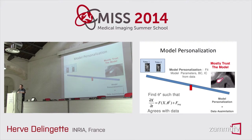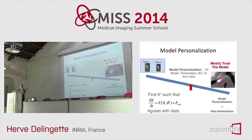The other approach, where you mostly trust your model, is called model personalization, also called data assimilation — a popular term in other fields of physics. The idea is to find the optimal set of parameters theta-star such that your dynamic model agrees with the data. It's a complete change of perspective: instead of adding iconic perturbations with no biophysical meaning, you optimize parameters and boundary conditions to agree with the data. This leads to predictive models.